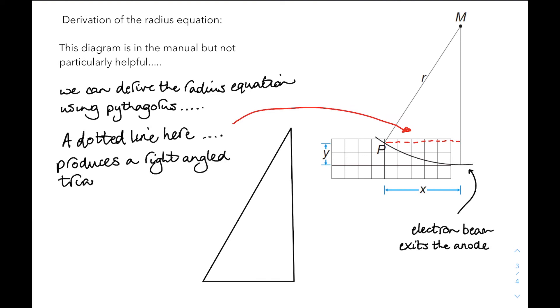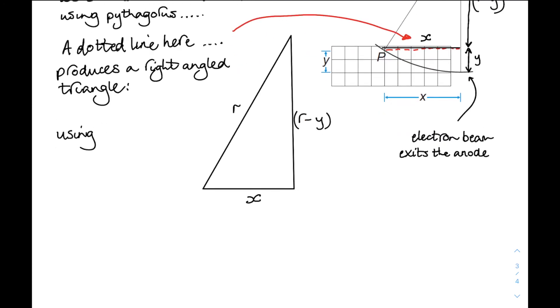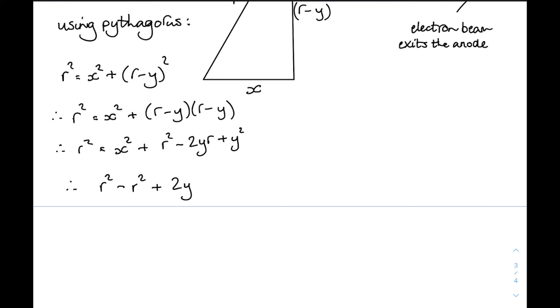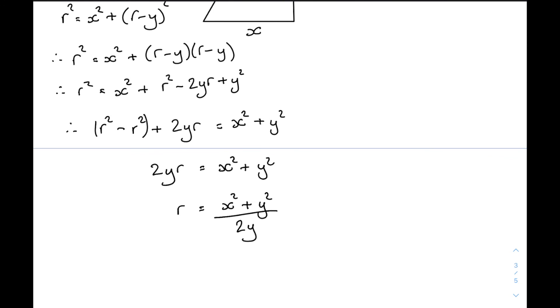And the hypotenuse of that right-angled triangle is the radius. And the vertical side will be the radius minus y and the horizontal side is x. And using Pythagoras then, r squared is x squared plus r minus y squared. So if we multiply out the brackets, we end up with x squared plus r squared minus 2yr plus y squared. And then with a little bit of algebra, if we just swap a few things around, we will get r squared minus r squared plus 2yr equals x squared plus y squared. We lose that first little bit, and 2yr equals x squared plus y squared. So r is x squared plus y squared over 2y. Bingo!